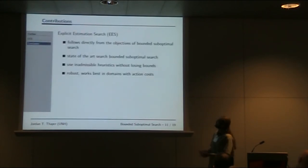To wrap up, Explicit Estimation Search is an algorithm which follows fairly directly from the stated goal of bounded suboptimal search. It provides state-of-the-art performance. It allows us to use inadmissible estimates both of cost and of solution distance in order to find solutions while still maintaining bounds. It's relatively robust but works especially well in domains with interesting action costs, where everything doesn't cost just one, but has a wide variety of costs. Thank you.